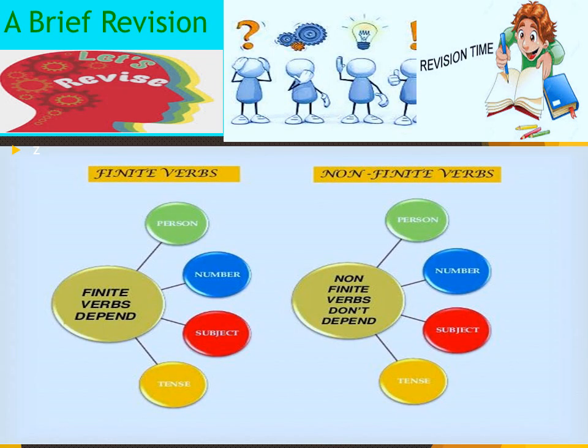Let's have a brief revision. Verbs consist of two kinds: finite verbs and non-finite verbs. Always remember that finite verbs are bound by person, number, subject and tense. They cannot be time free — they are always within time limits. On the other hand, non-finite verbs are always independent of person, number, subject and tense.